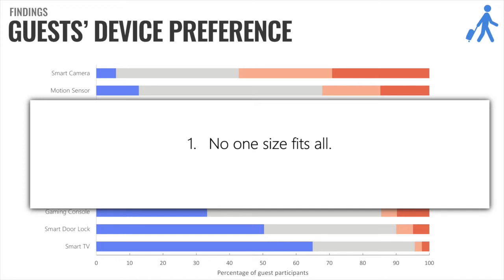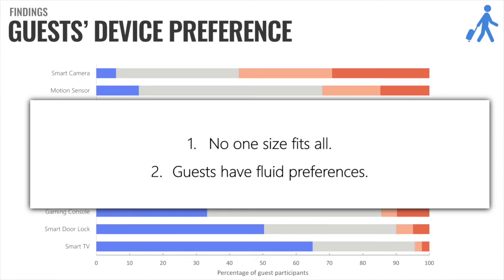Furthermore, participants also expressed that they have fluid preferences — their preferences could change depending upon context. For example, they may generally not prefer a gaming console, but if they were traveling with kids, they would want one. They said their preferences also depend on where the Airbnb is located, how much time they expect to spend inside the Airbnb, and how many days they are staying.